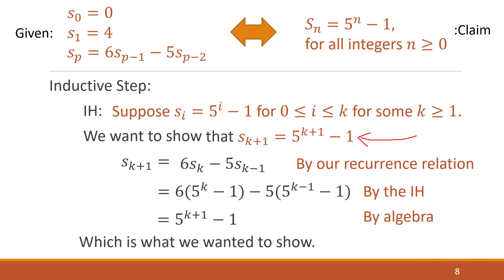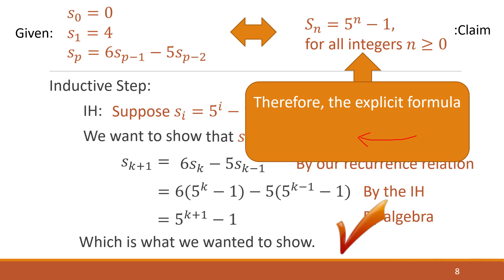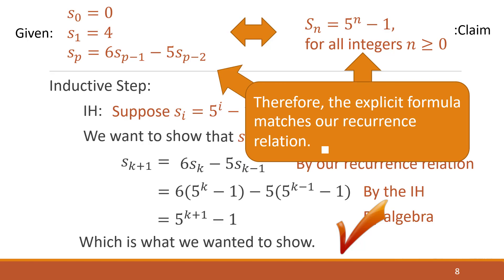We've completed our proof. This means that the explicit formula we claimed is equivalent to the given recurrence relation — it does indeed match. Our proof is complete.